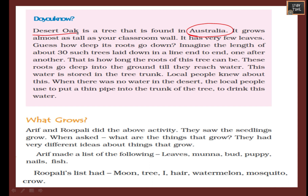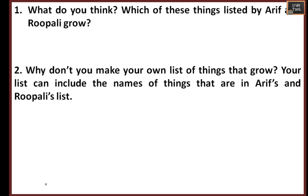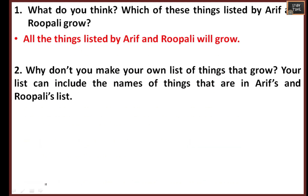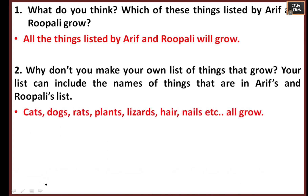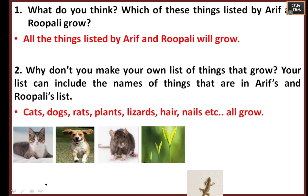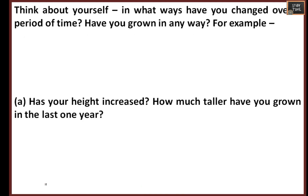Arif and Rupali did the seedling activity and were asked what things grow. Arif listed: leaves, bud, puppy, nails, and fish. Rupali listed: moon, tree, hair, watermelon, and mosquito. What do you think — which of these things grow? All things will grow. You can also make your own list, which can include: cat, dog, rats, plants, lizards, nails — all grow.